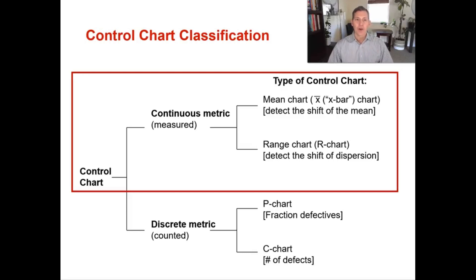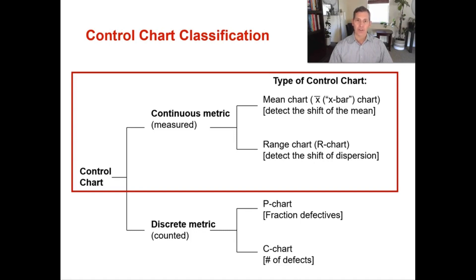In this video we are going to talk about control charts, specifically control charts that follow the continuous metric — something that is measured. The continuous metric control charts are the mean chart, called an X-bar chart, and the range chart, called an R chart. We will go through examples on how to calculate both. In the next video we will cover discrete metrics: the P chart and the C chart.